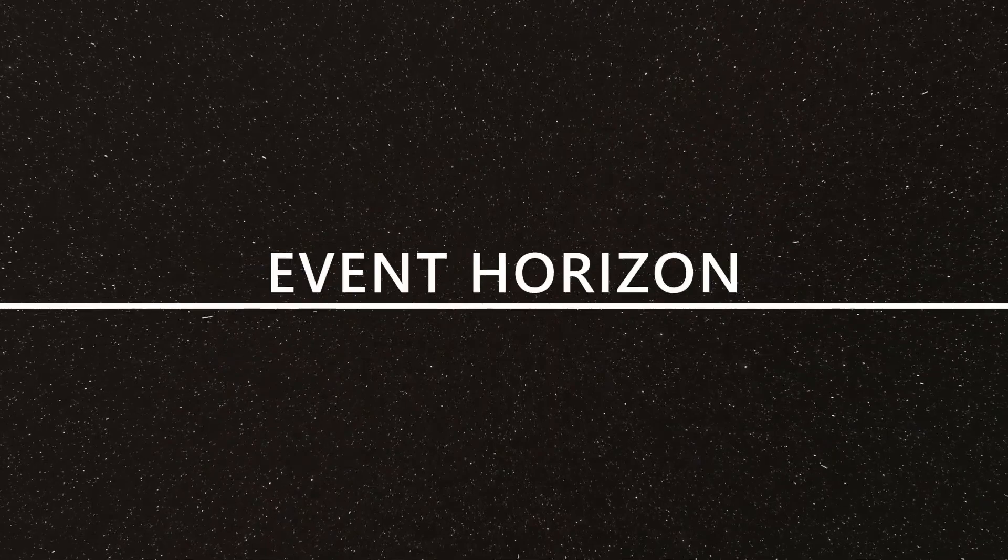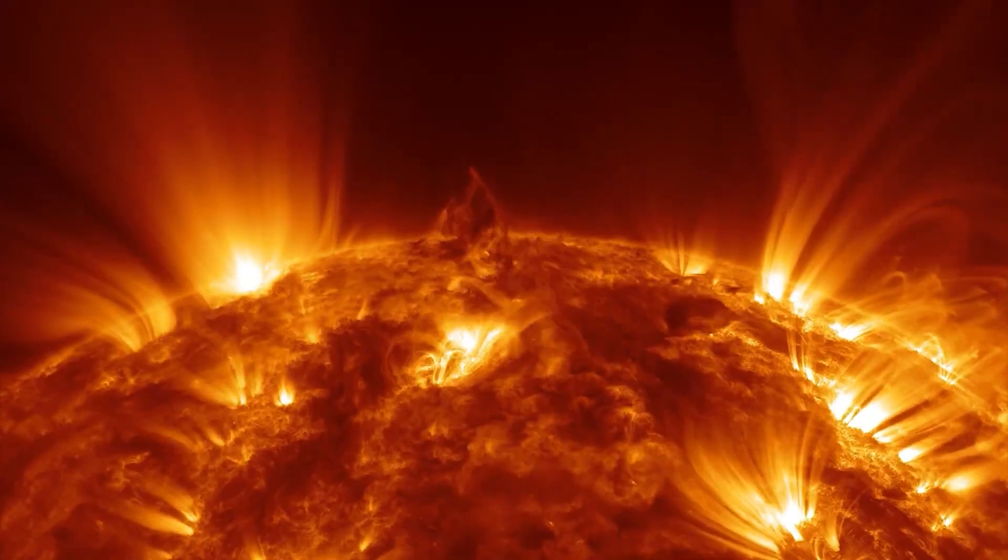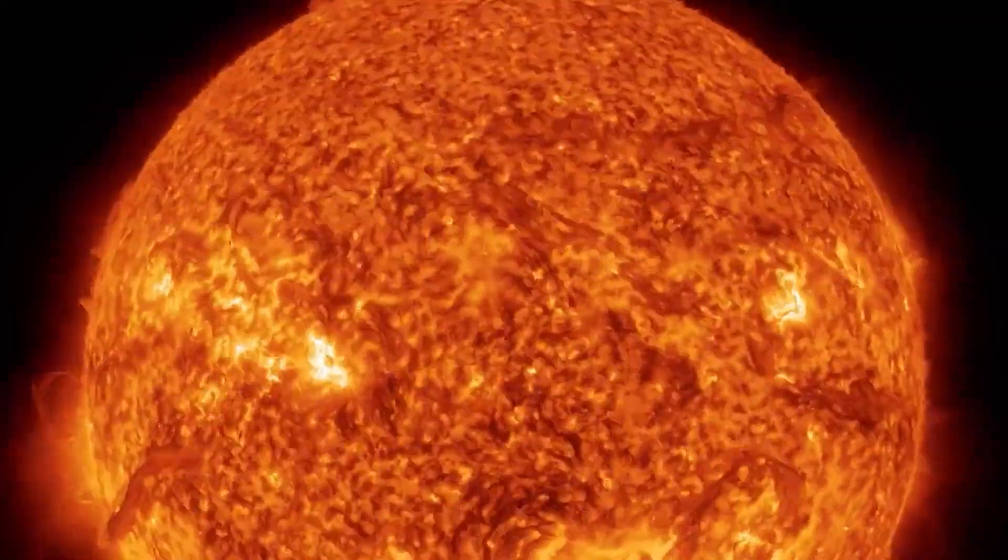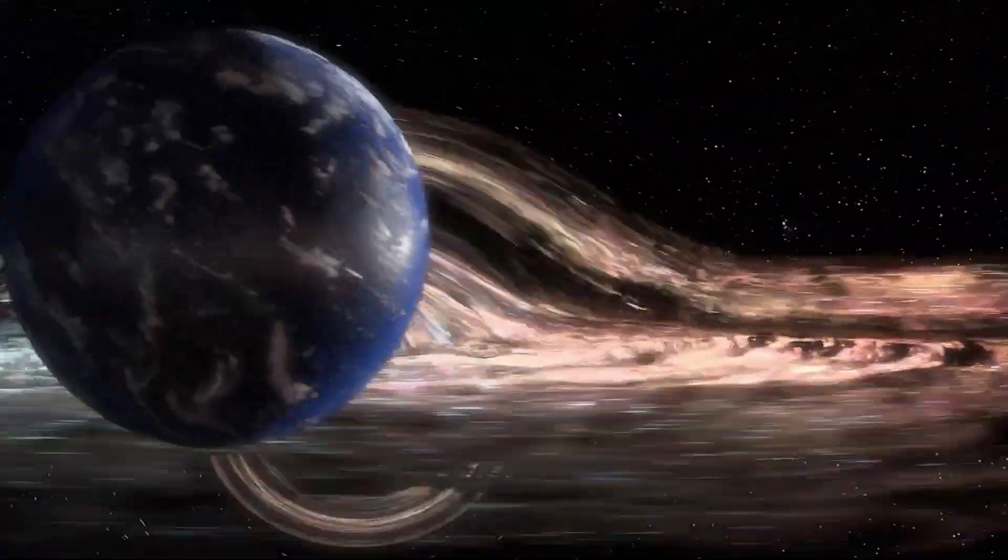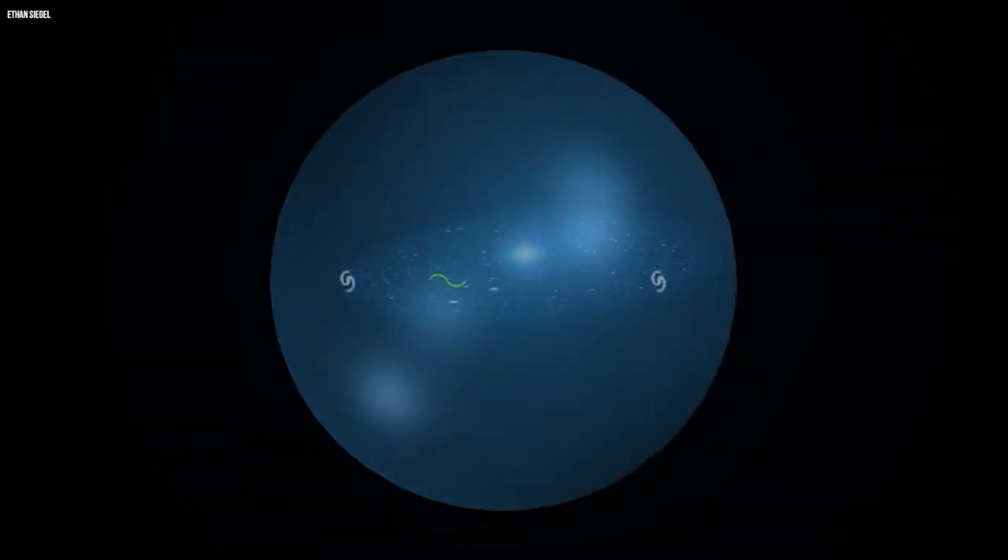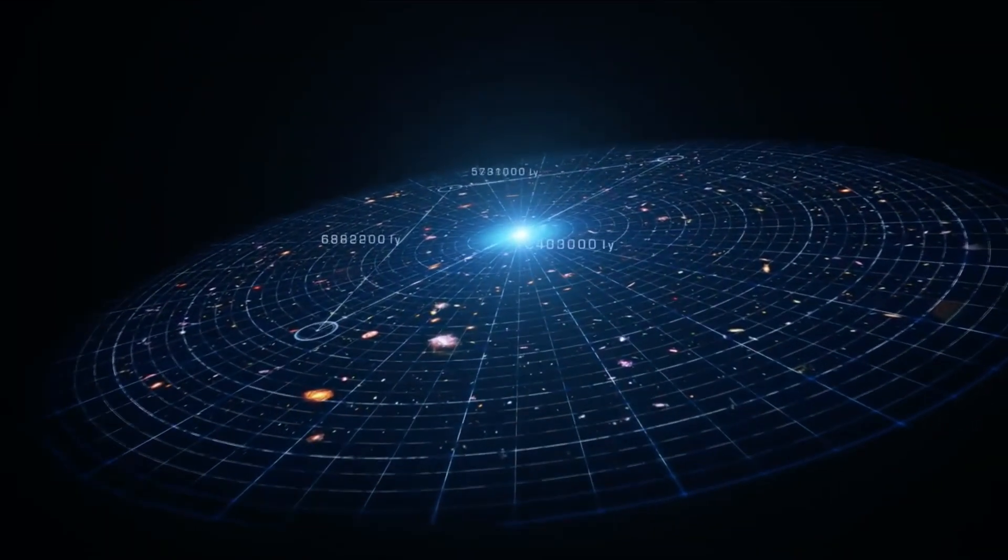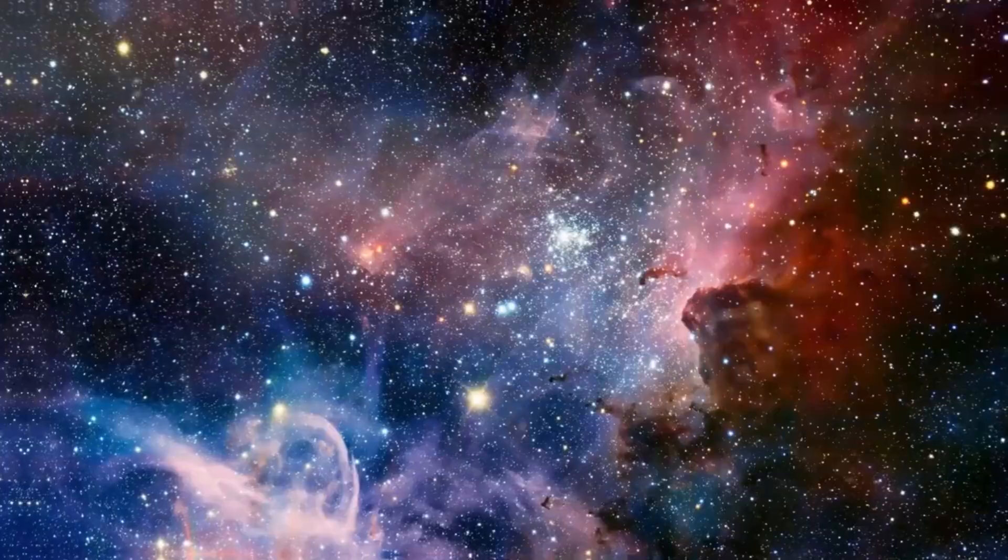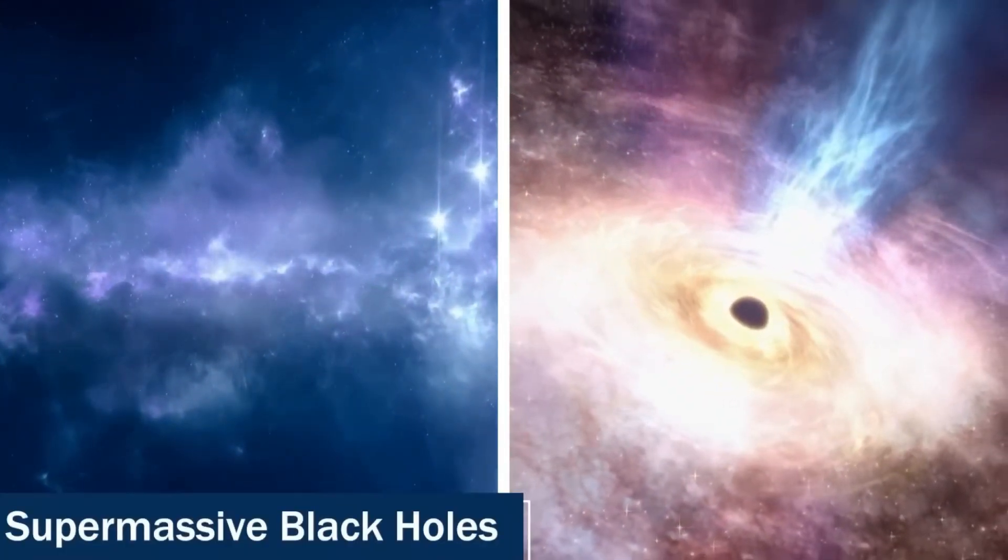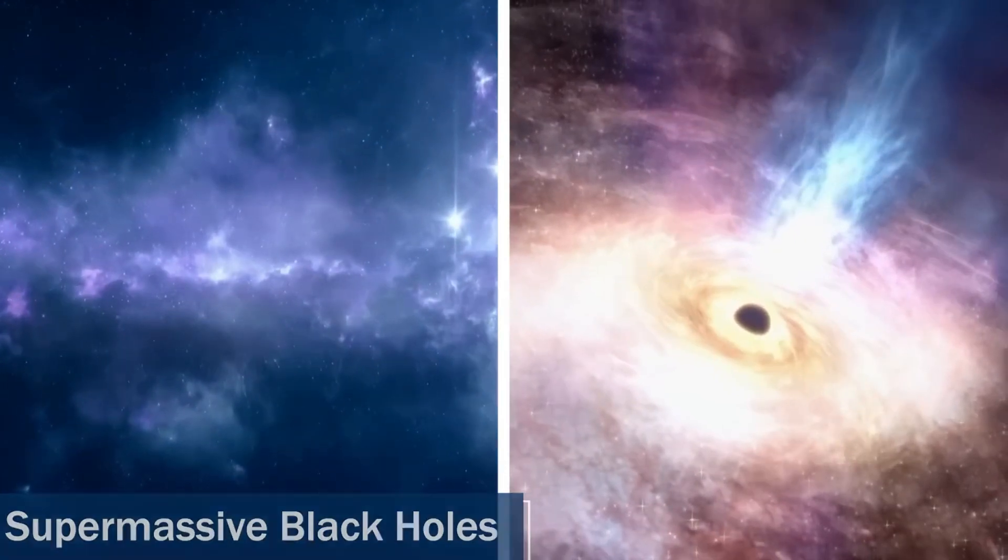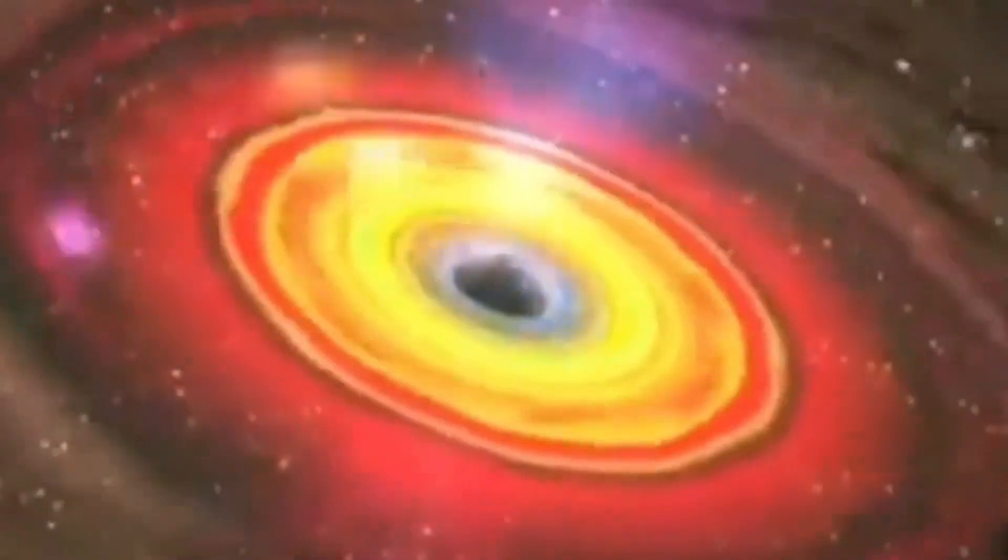Gravitational lensing is not only a tool for observing distant objects but also a method for detecting dark matter, an invisible form of matter that makes up most of the universe's mass. Dark matter does not emit or absorb light, making it undetectable through traditional observational methods. However, its presence can be inferred through its gravitational effects on visible matter, including the lensing effect it produces on light from distant galaxies. By mapping the distortions in the light caused by dark matter, astronomers can create detailed maps of its distribution in the universe, providing crucial information about its nature and role in cosmic evolution.